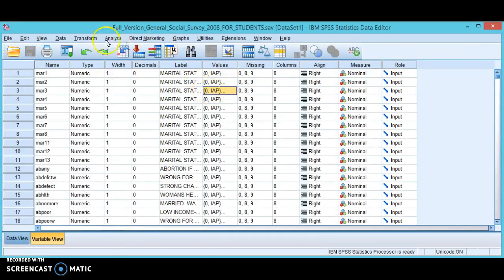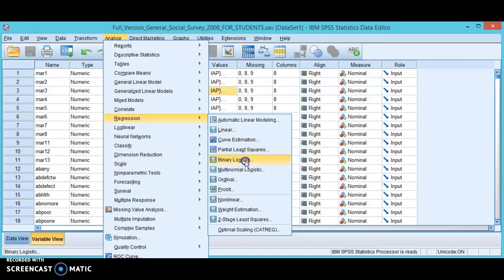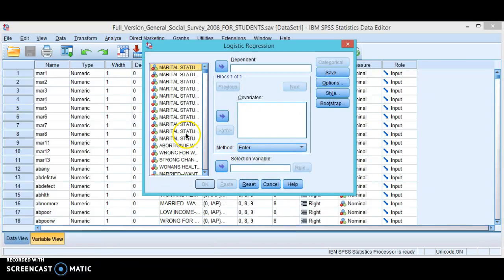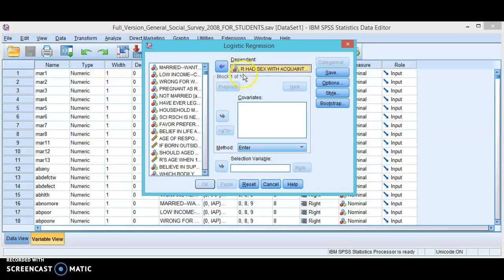I'm going to go to analyze, regression, and then binary logistic regression. I'm going to grab my dependent variable—having sex with an acquaintance last year. It's a yes-no question so that's a good dependent variable. And then I'm going to add age in as an independent variable.